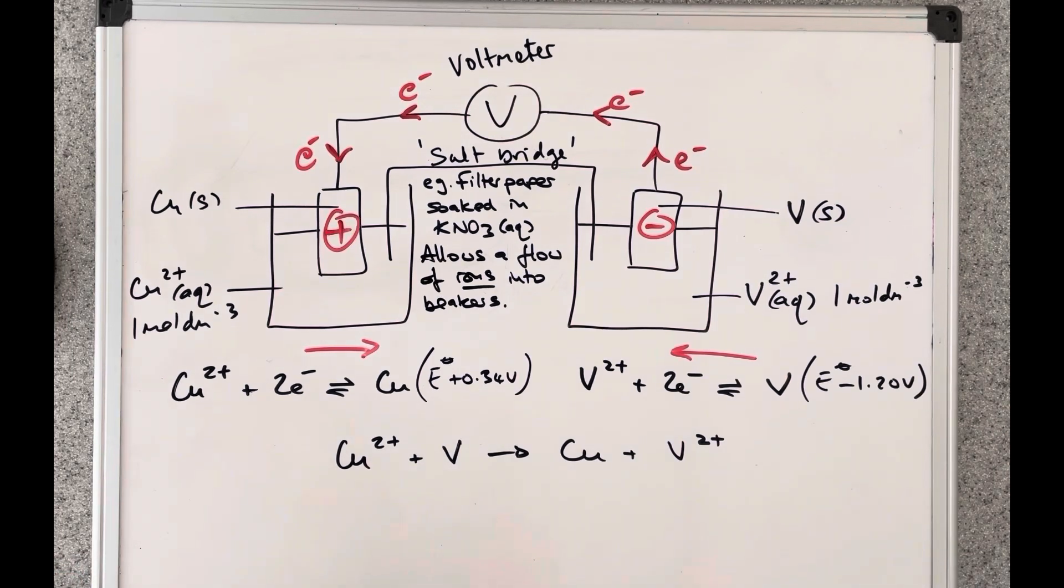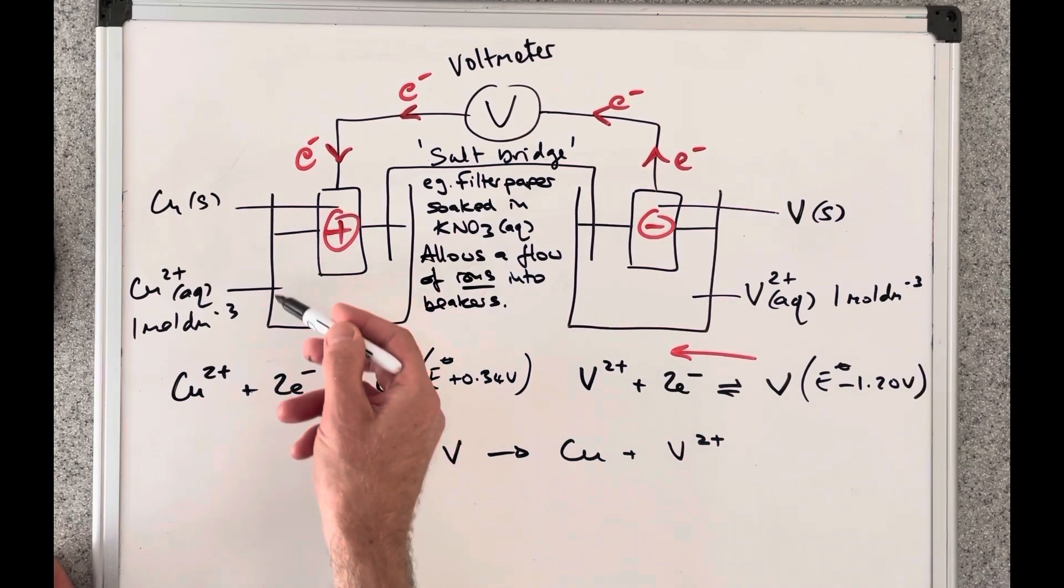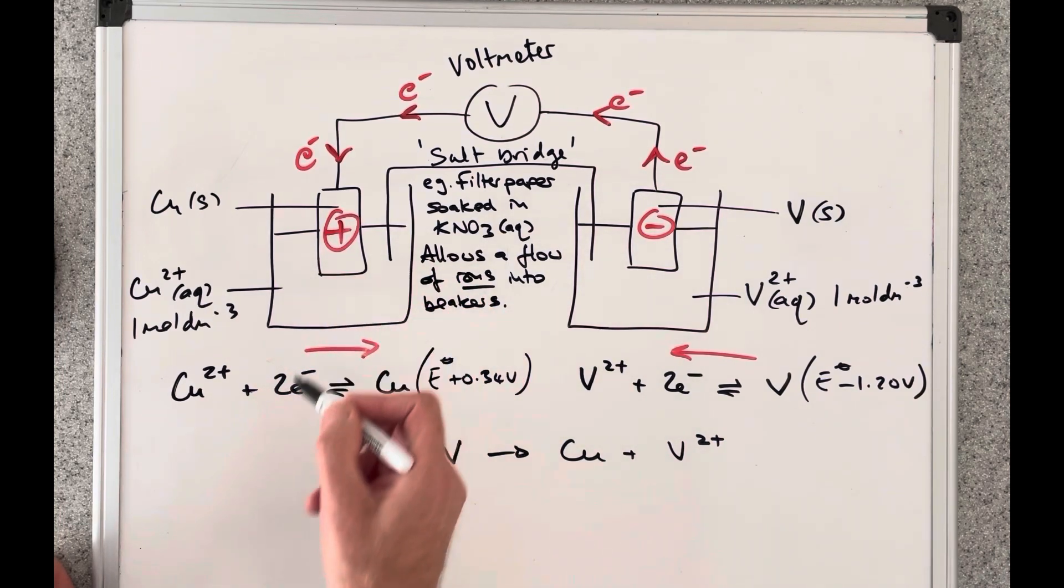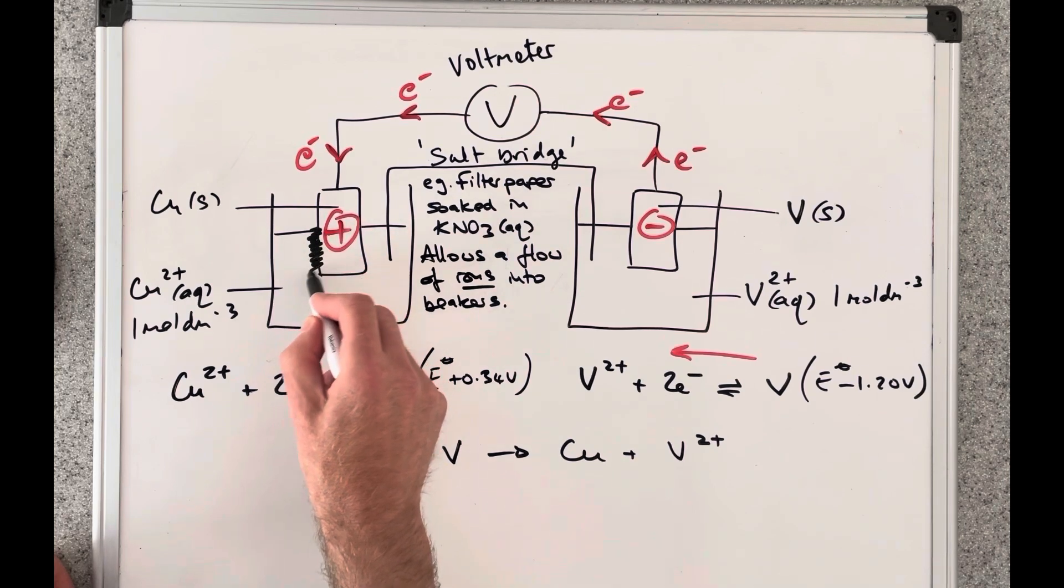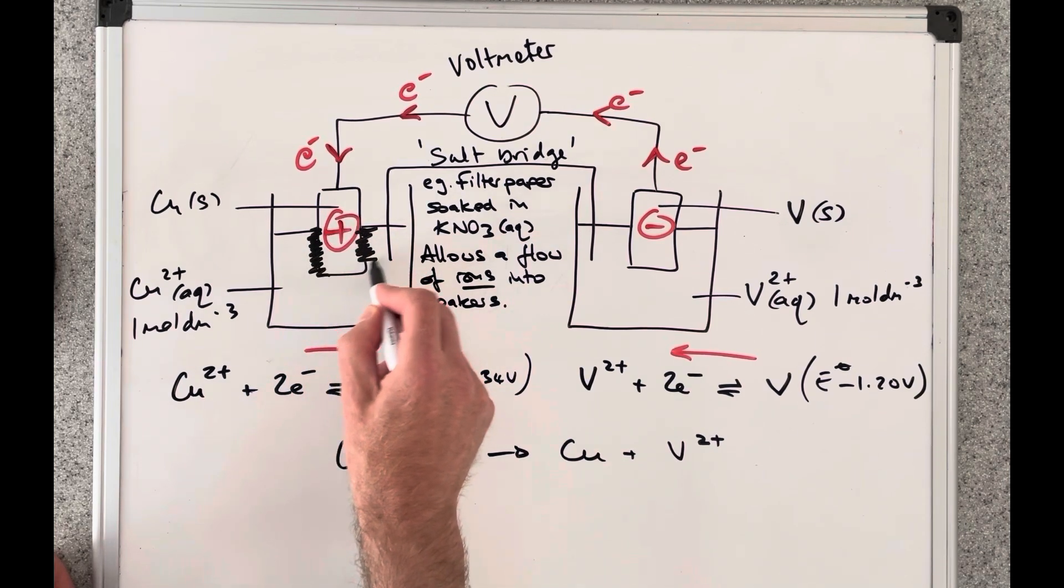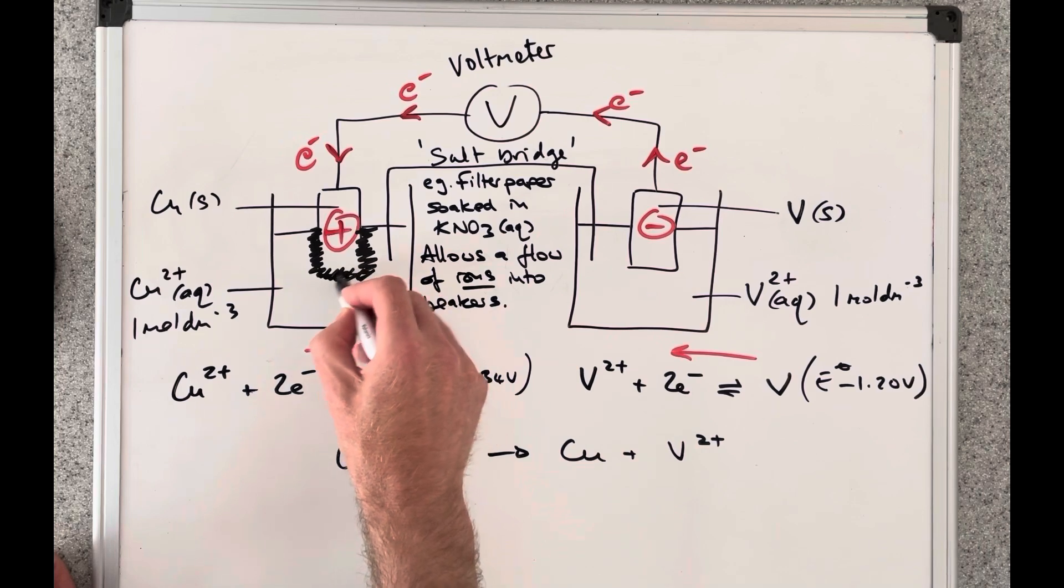So then if you think about what's going to happen over the course of time. So you can see this half equation here is running in the forwards direction. So the copper 2 plus ions in here are going to become copper atoms. So this electrode is basically going to kind of grow. You're going to have copper deposited on this electrode.